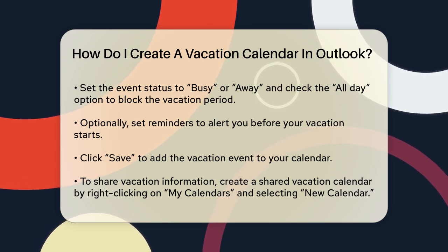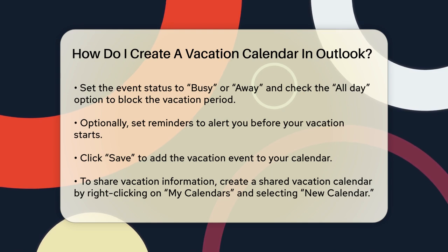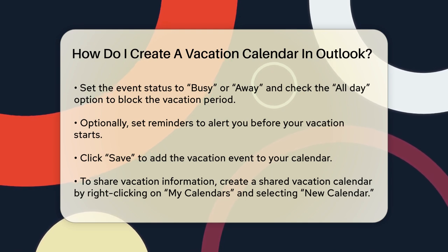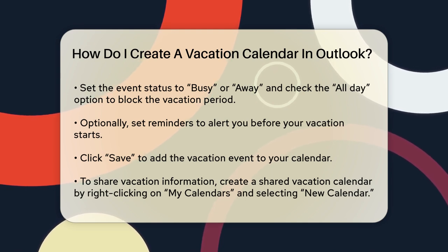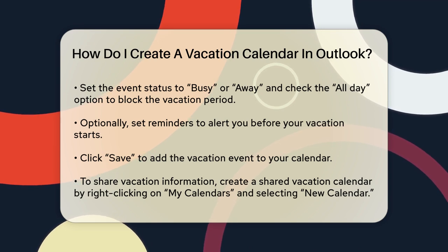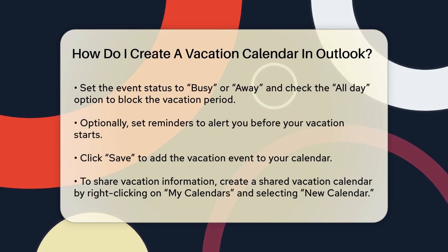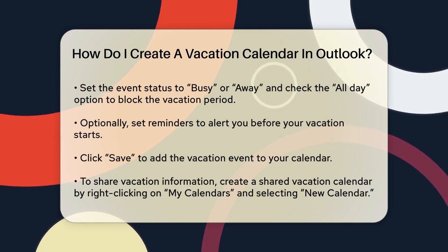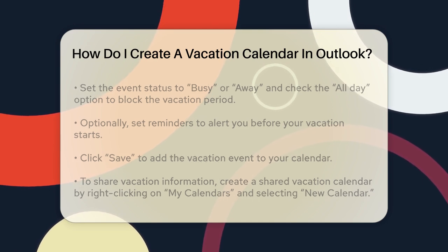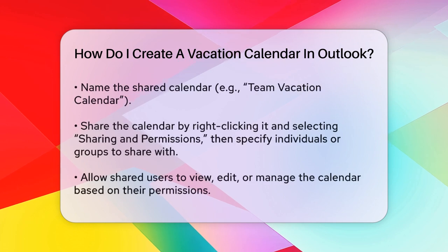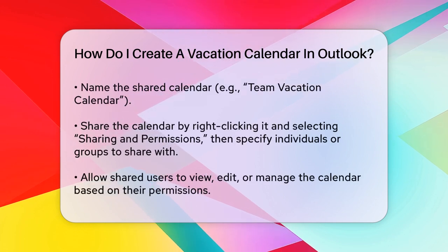Now, let's talk about sharing this information with your team. One effective way is to create a shared vacation calendar. Start by opening your Outlook calendar and right-click on My Calendars in the left-hand panel. Select New Calendar from the context menu and give it a name like Team Vacation Calendar.